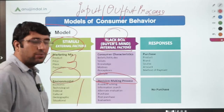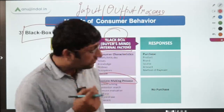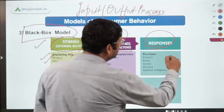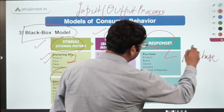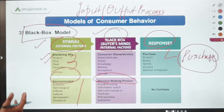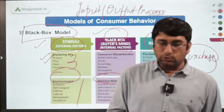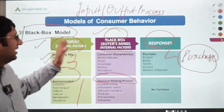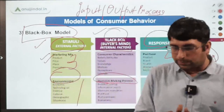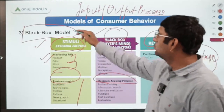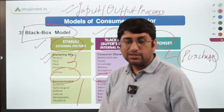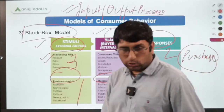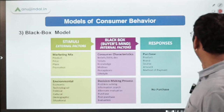The middle segment of the black box model represents your mind. After processing stimuli through internal factors, the final element is post-purchase behavior — the response. You may purchase the product, or not. This is the black box or input-output process model, divided into three categories: input stimuli, the black box mind, and output response. Please don't get confused if an exam asks about the input-output process model — it's the same thing.